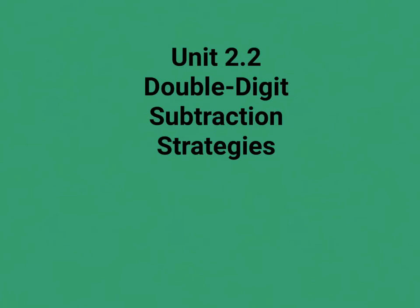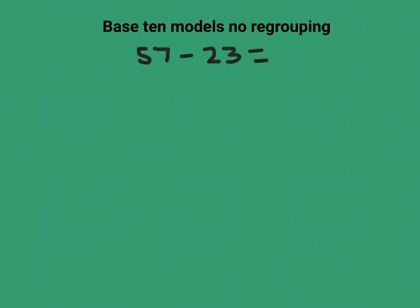In unit 2.2 we will be focusing on double digit subtraction strategies. First we'll take a look at using a base 10 model to solve a subtraction problem. So we have 57 subtract 23.